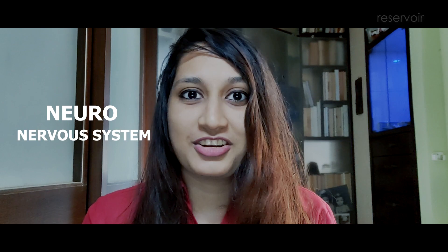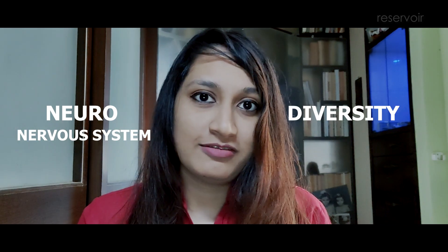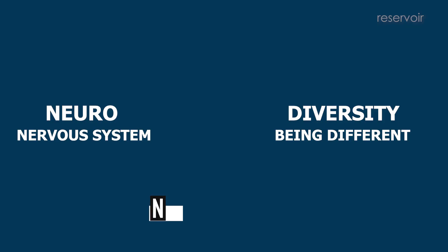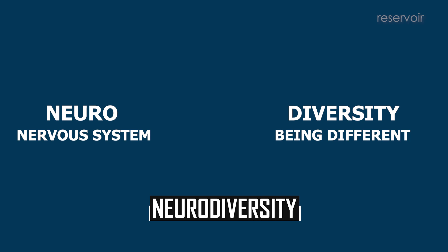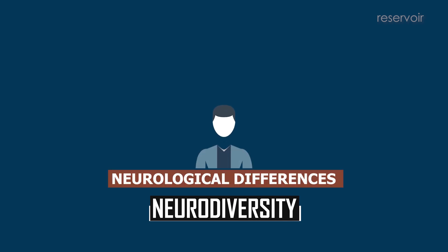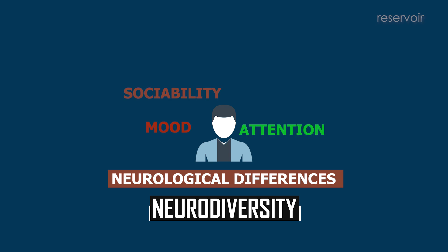Neurodiversity is simply broken down: neuro, which means the nervous system or the brain, and diversity, which means being different. Neurodiversity simplified can mean having neurological differences which could affect a person's sociability, attention span, mood, and learning abilities. So who came up with this term neurodiversity?